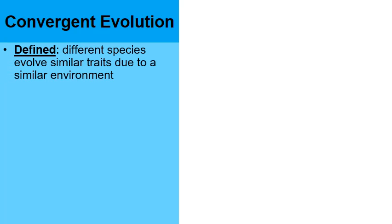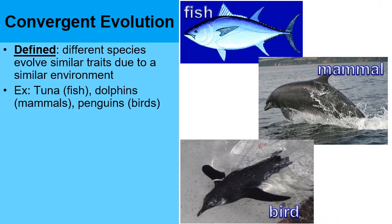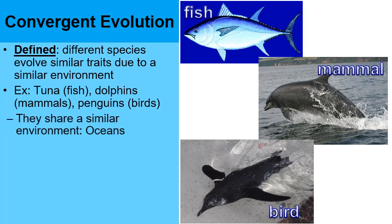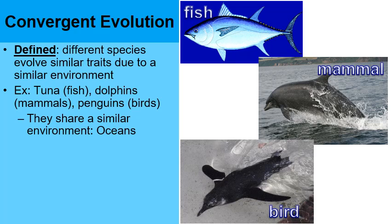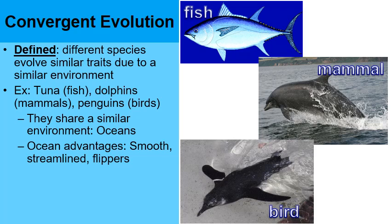Let's switch to convergent evolution. This is where different species over time will evolve similar traits because they live in a similar environment. One of the more visual examples are tuna representing fish, a dolphin representing mammals, and a penguin representing birds. What they have in common is their environment — these are all ocean, aquatic marine organisms. Notice how they all have similar traits even though they're very distantly related.